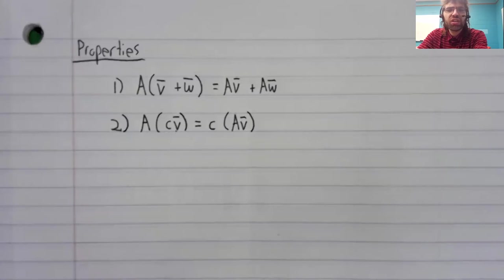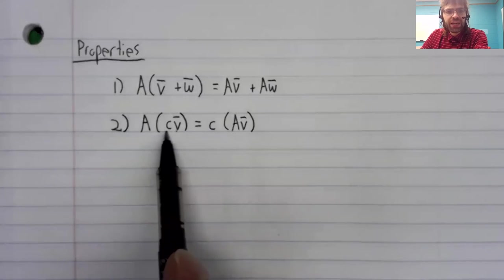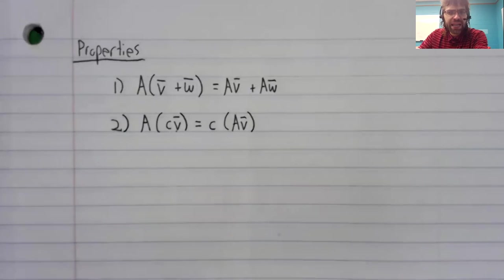The matrix has to be written first. The vector has to be written second. But scalars, we can move around.